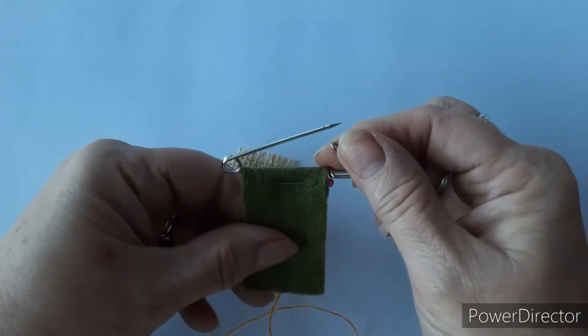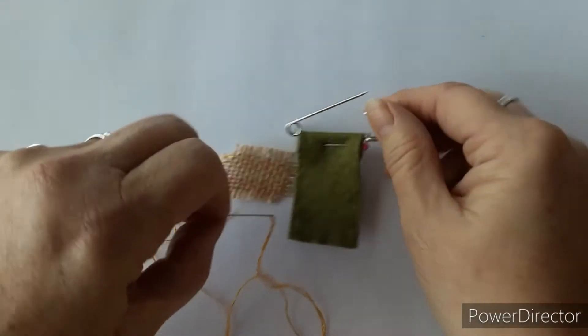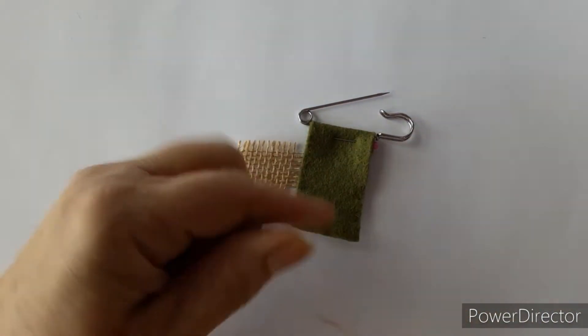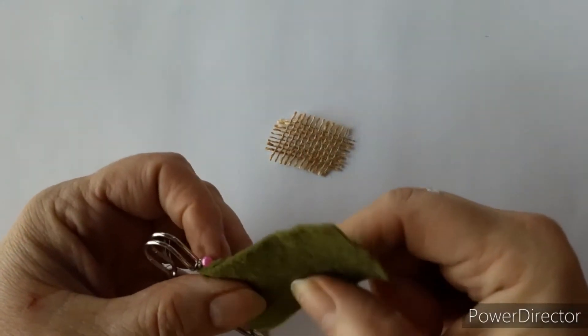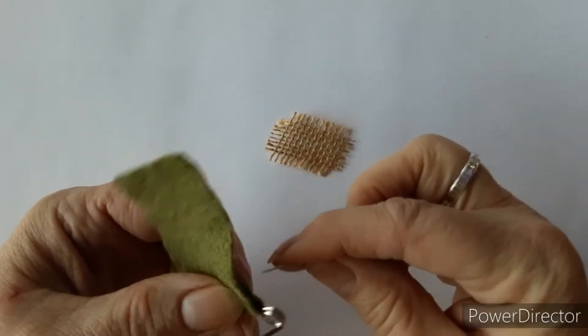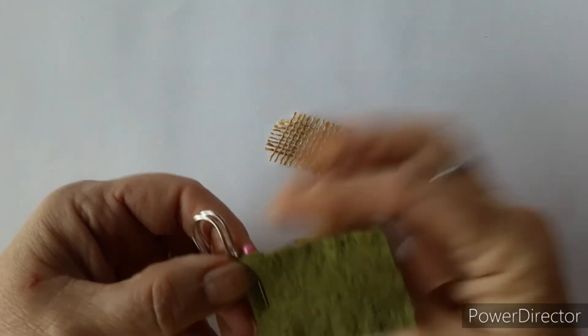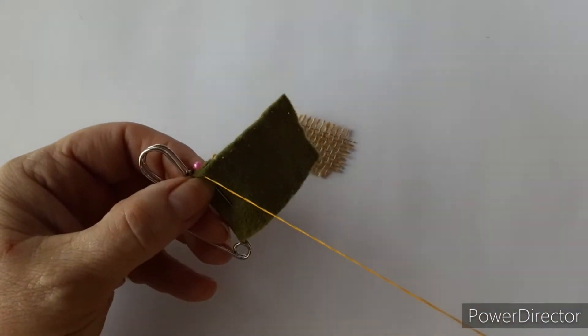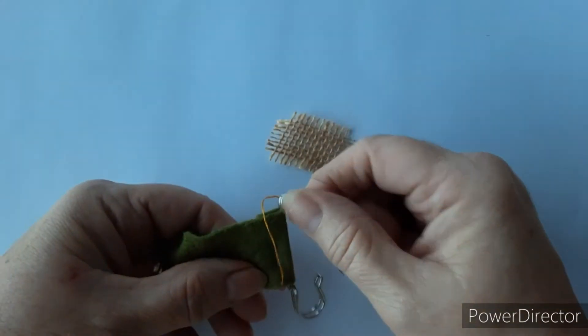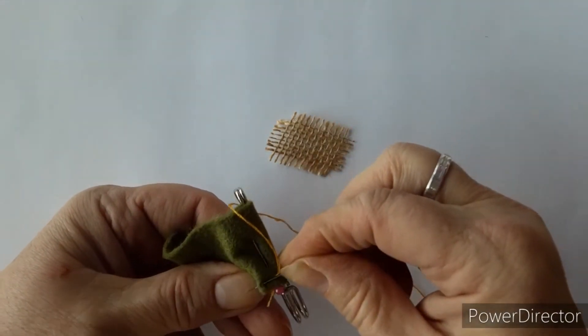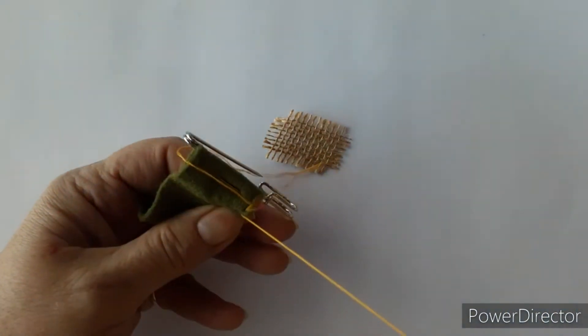And we'll take the needle which we've already threaded up with the embroidery silk. We're just using the three strands of embroidery silk. Starting with a knot at the back, we're just going to do a simple running stitch around the edge in a contrasting color thread, just to add a bit of decoration.